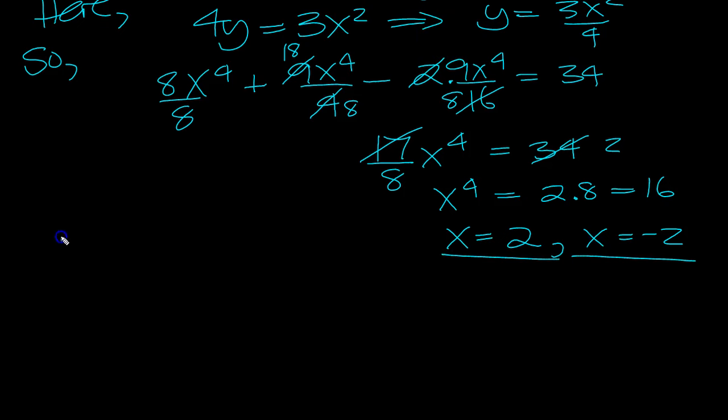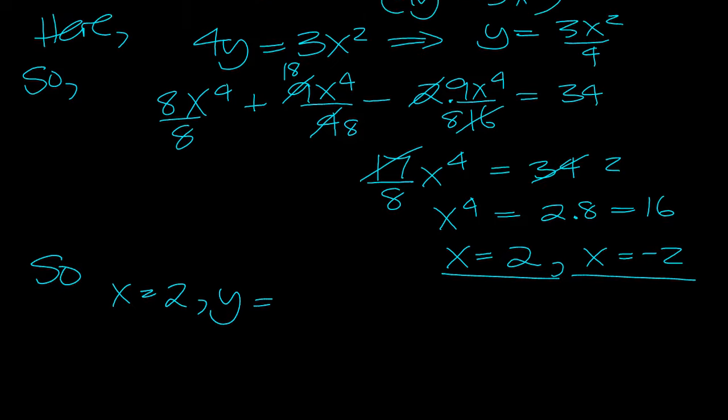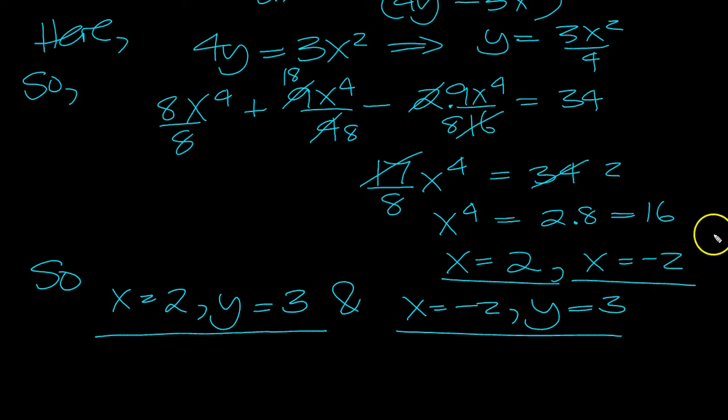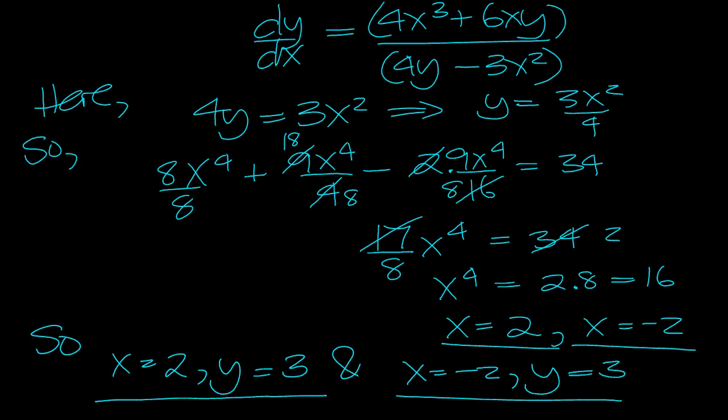x is 2 and x is minus 2, so x equals 2, y is equal to 3x squared over 4, wasn't it? So that would be 3, and x is minus 2, and y is equal to, again, it will be 3. And these are the coordinates that we needed to find out.